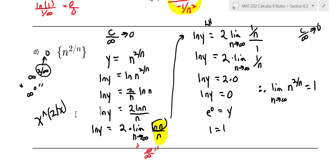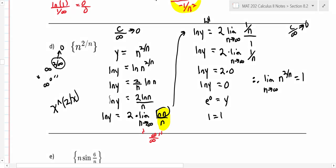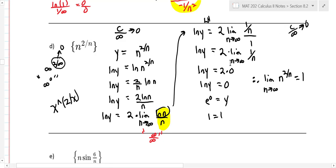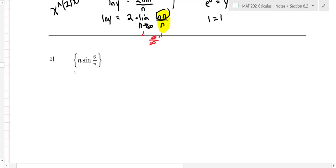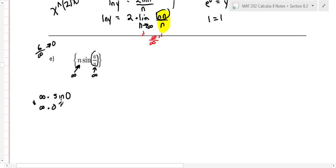L'Hôpital's rule is basically Calc 1 work. Let's do one more like this. For this next sequence, if we replace n with infinity, we get infinity times sine of zero — since six over infinity goes to zero, and sine of zero is zero. So our form is infinity times zero, which is an indeterminate form. This one is not a logarithm problem since it doesn't involve a power.